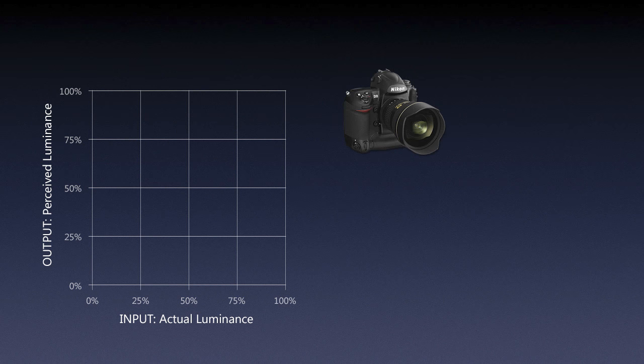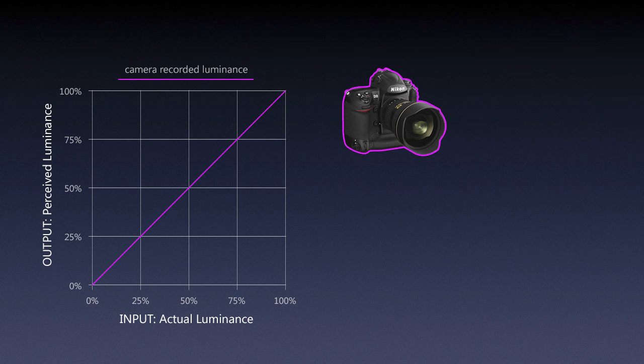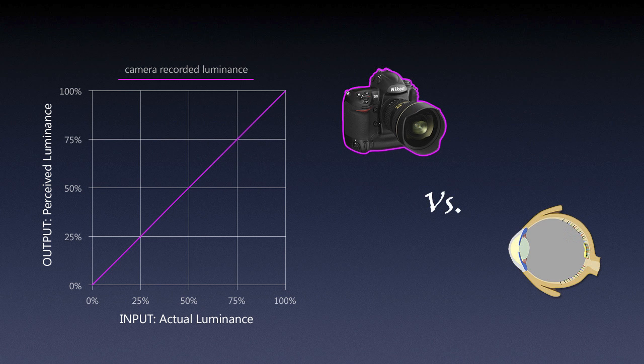Your camera captures light in a linear fashion — pretty much like a straight line. This is known as linear capture. If we imagine a gradient, the distribution of tones would be quite linear: 50% input gives 50% output, because it's a linear way to capture light.